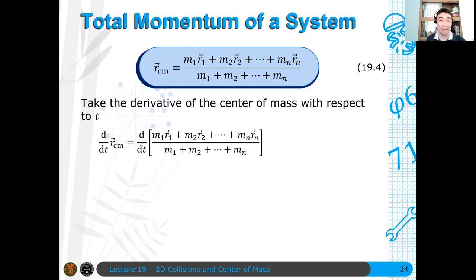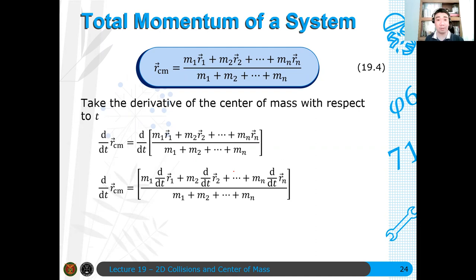So constants lang yan, pwede yung ilabas. So pwede mong ilabas yan, and ang magiging derivatives lang ay derivatives ng positions. And the derivative of position is what? Ano lang yan? Velocity.